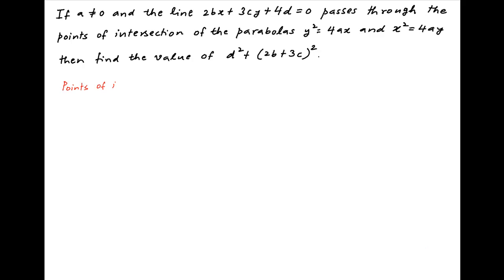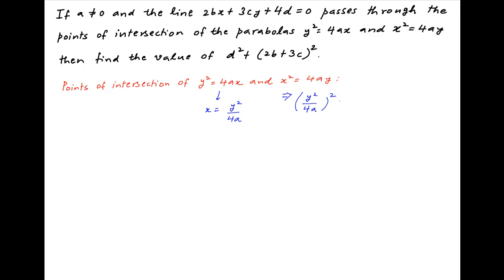We start by obtaining the points of intersection of the parabolas y² = 4ax and x² = 4ay. The equation of the first parabola can be written as x = y²/4a. Plugging this value of x into the equation of the second parabola, we get (y²/4a)² = 4ay, which implies that y⁴ = 4a³ · y.